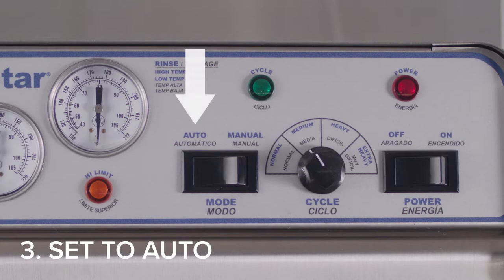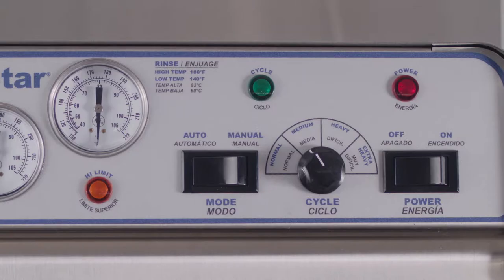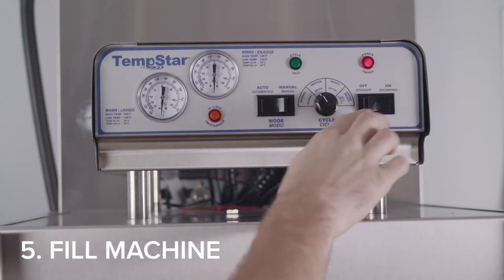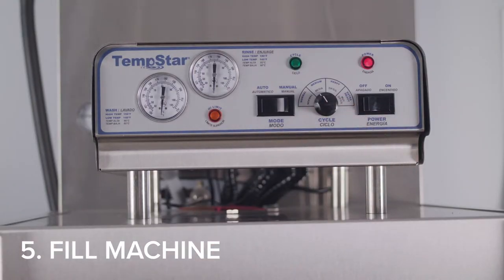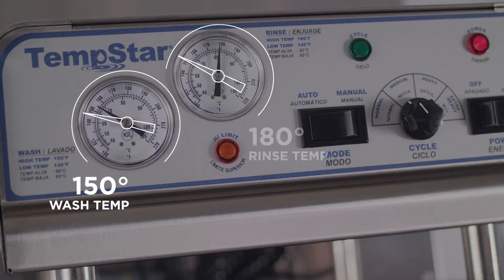Set the mode to automatic. Then choose a cycle setting from normal to extra heavy. Close the door and switch the machine on. It will begin filling automatically. Run a minimum of three cycles to raise the water temperature. Once the recommended temperature has been reached, the machine is ready for operation.